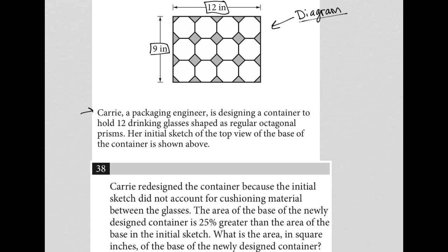The question or the information before the question says, Carrie, a packaging engineer, is designing a container to hold 12 drinking glasses shaped as regular octagonal prisms. Her initial sketch of the top view of the base of the container is shown above.